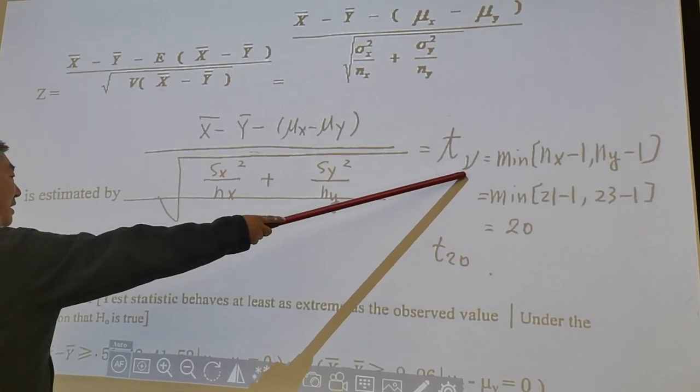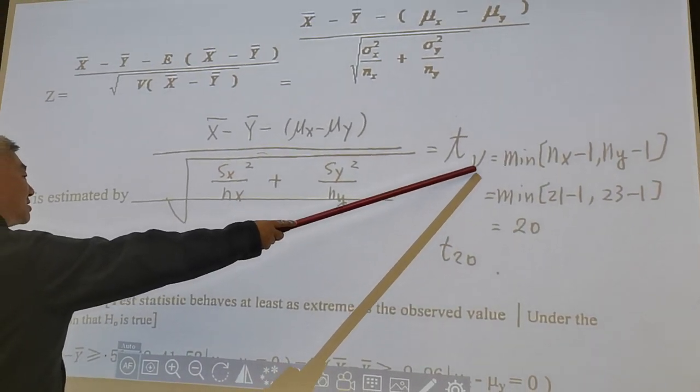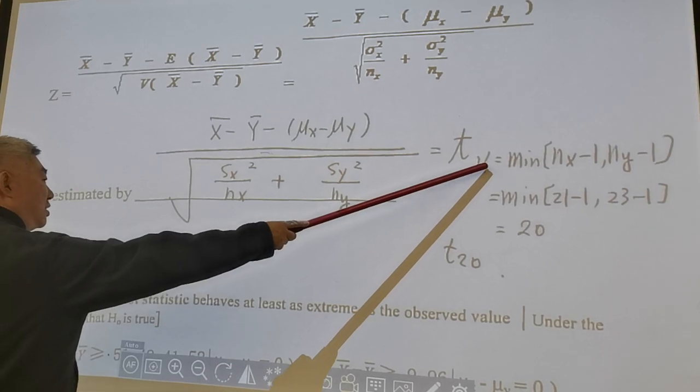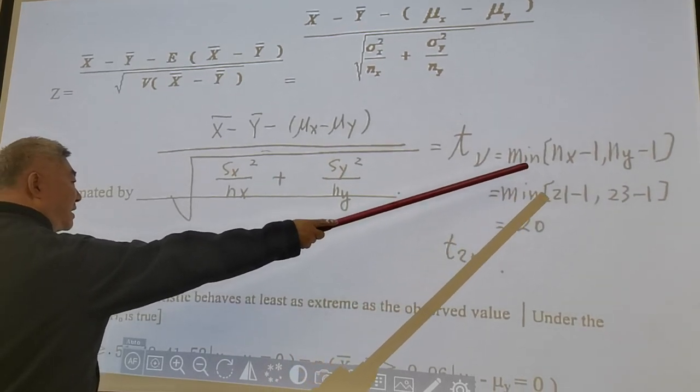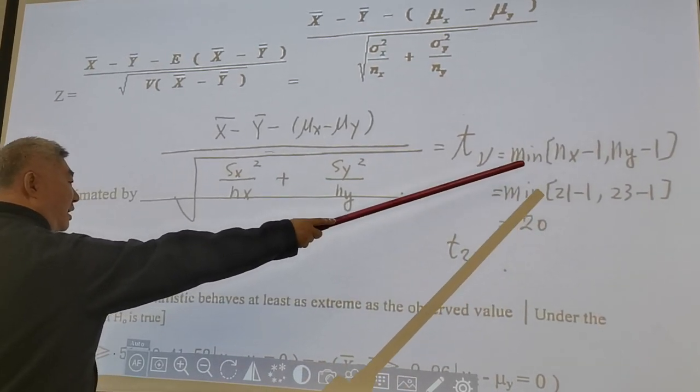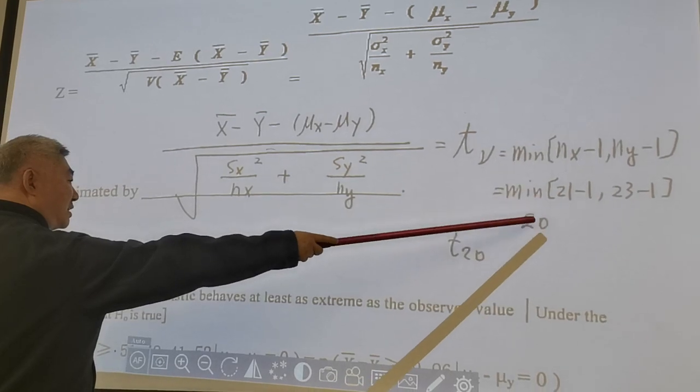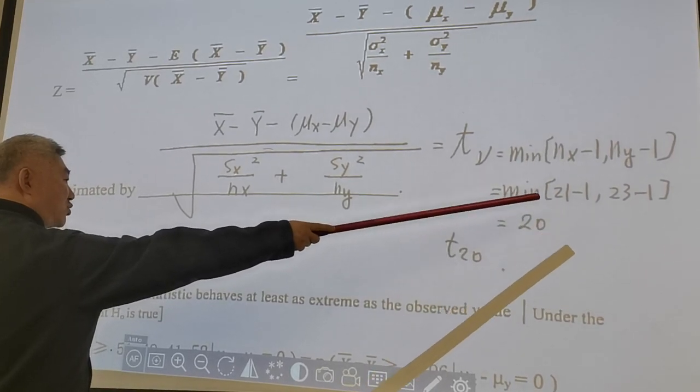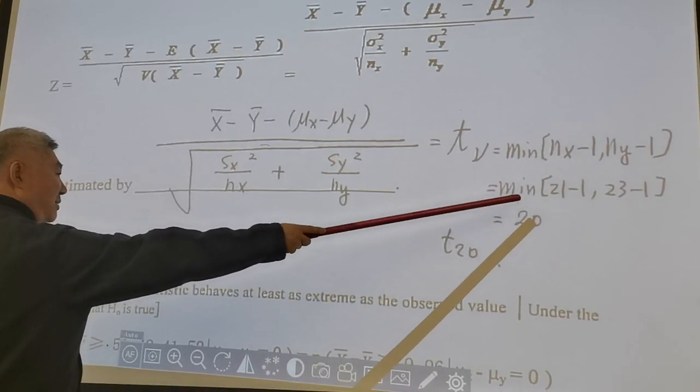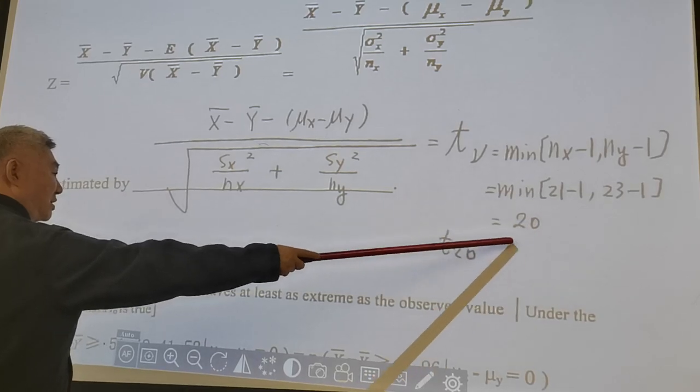This one is the easy one, but it's not as accurate. But let's just look at this one. Nu equal to minimum of nx minus 1 and ny minus 1. Nx is 21, minus 1 is 20. And ny is 23, 23 minus 1 is 22. Minimum of 20 and 22 is 20.